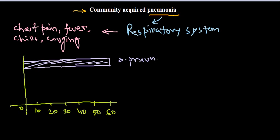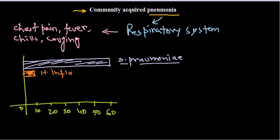The second important organism causing this disease is Haemophilus influenzae. The total percentage of disease it causes is seven to ten percent.